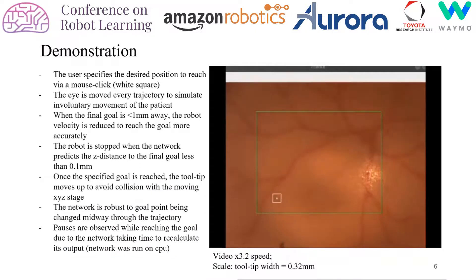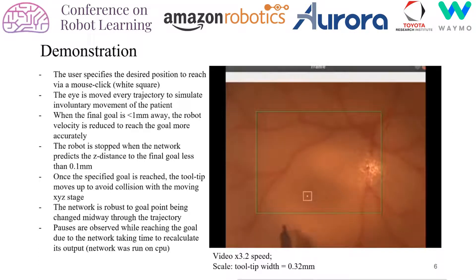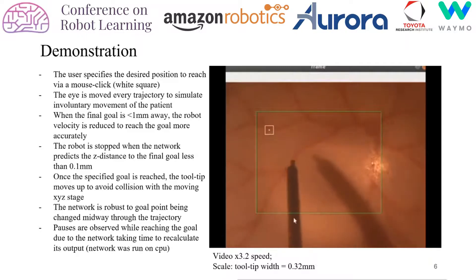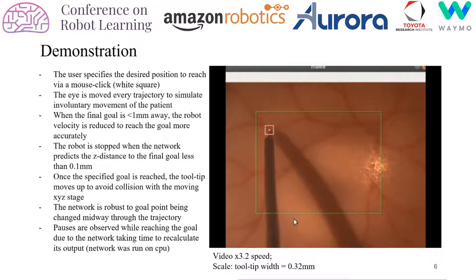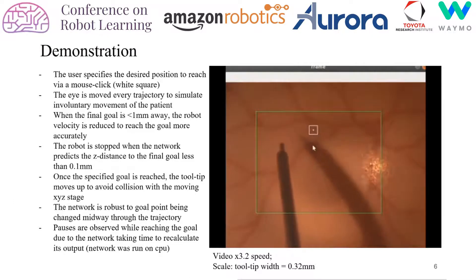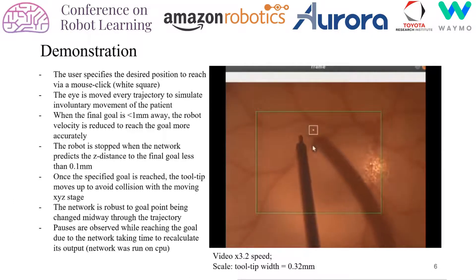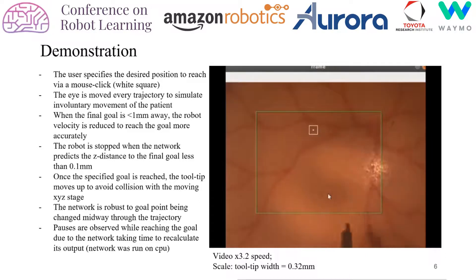Here we demonstrate how our method is utilized in a surgical scenario. Based on the surgeon's click, which is represented as a white square, the tool navigates to the goal in 3D space. Note that the surgeon is only required to specify the goal point in 2D space and the network moves the tool in 3D space. Since estimating depth is the challenging task for humans, the network takes the burden of figuring out how to navigate along the depth dimension based on its training experience.